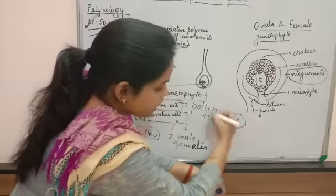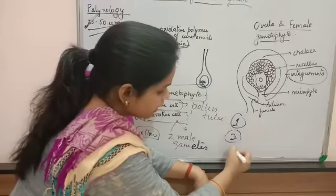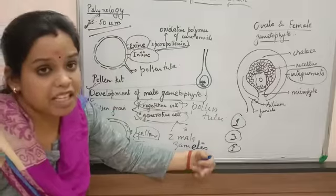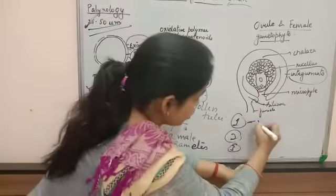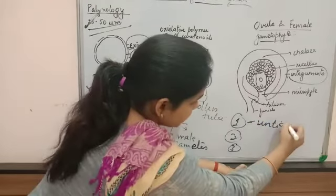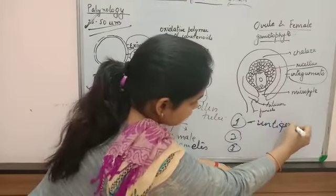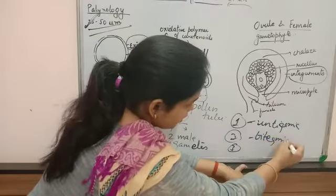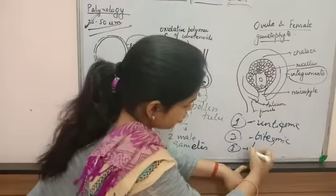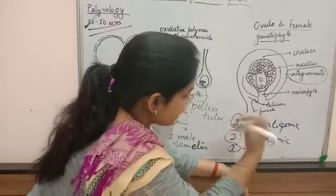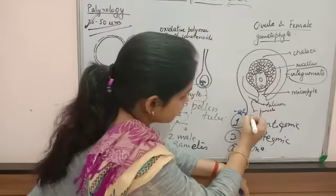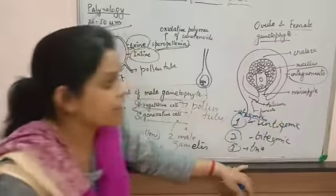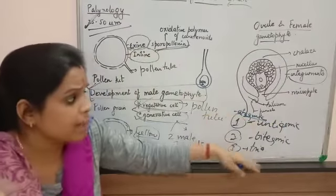Based on the number of integuments present, we give them names. If there is one integument, it is called unitegmic. If there are two, it is called bitegmic. If there are three, it is called tritegmic. If there are none, it is called ategmic.